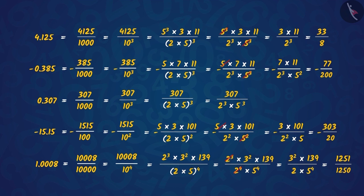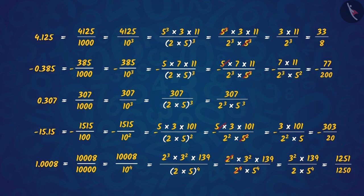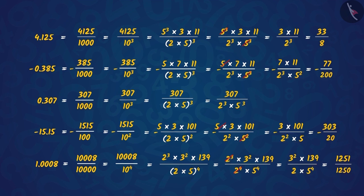What do you see here? We can see that all real numbers whose decimal expansion is terminating are written as a rational number in the form P upon Q, where P and Q are co-prime, and the denominator Q has only powers of 2, or powers of 5, or powers of both 2 and 5. This is because the prime factors of 10 are only 2 and 5.